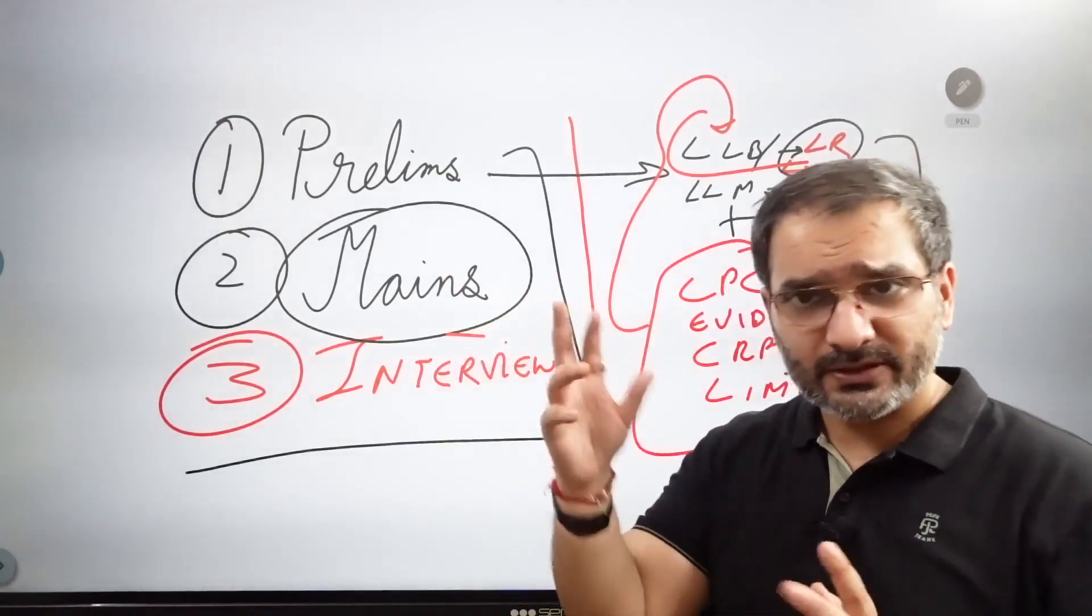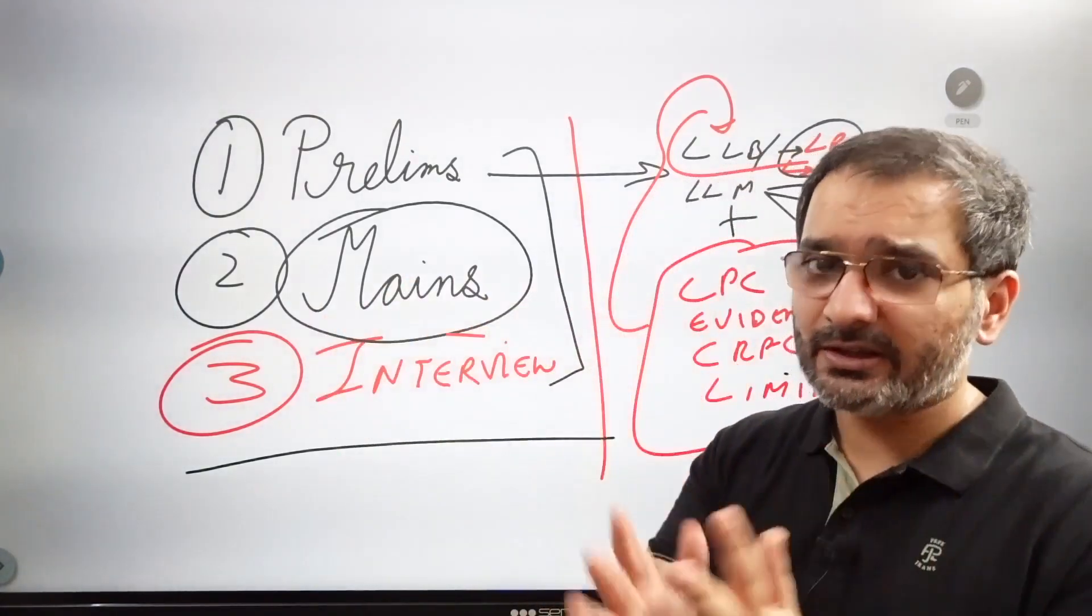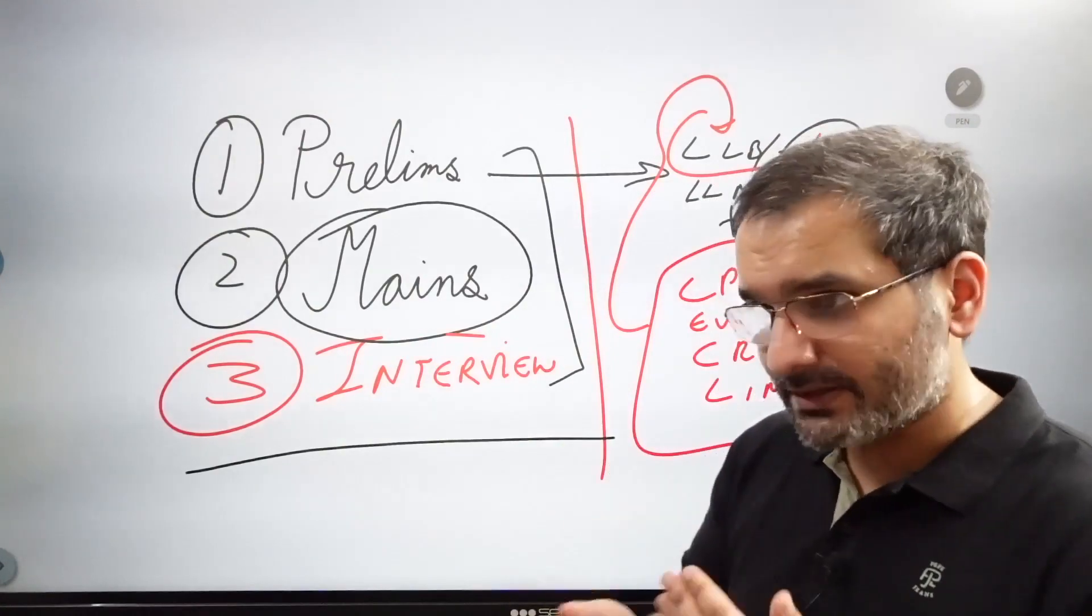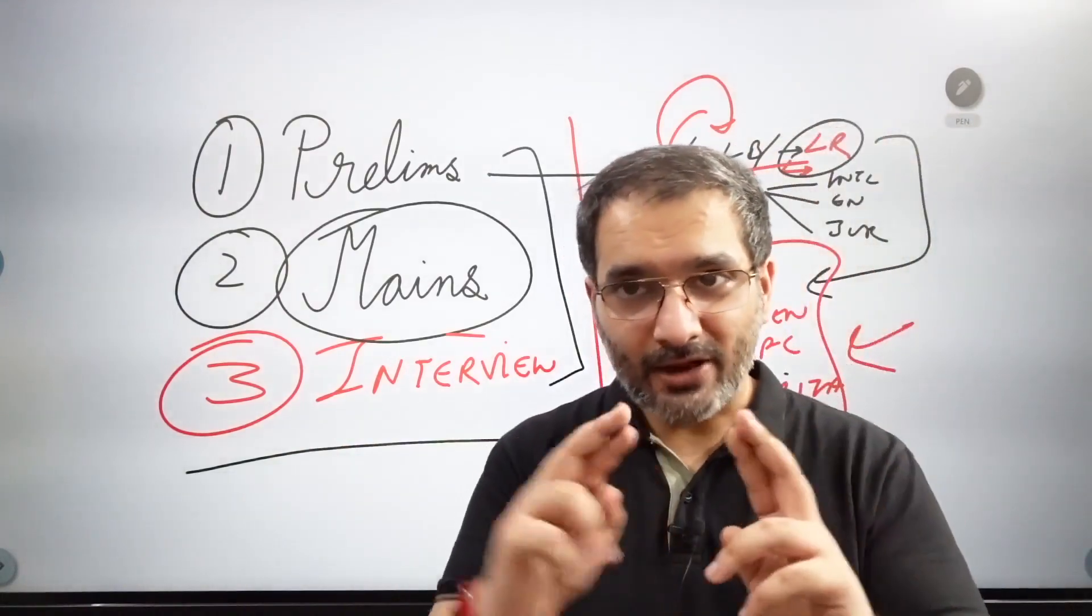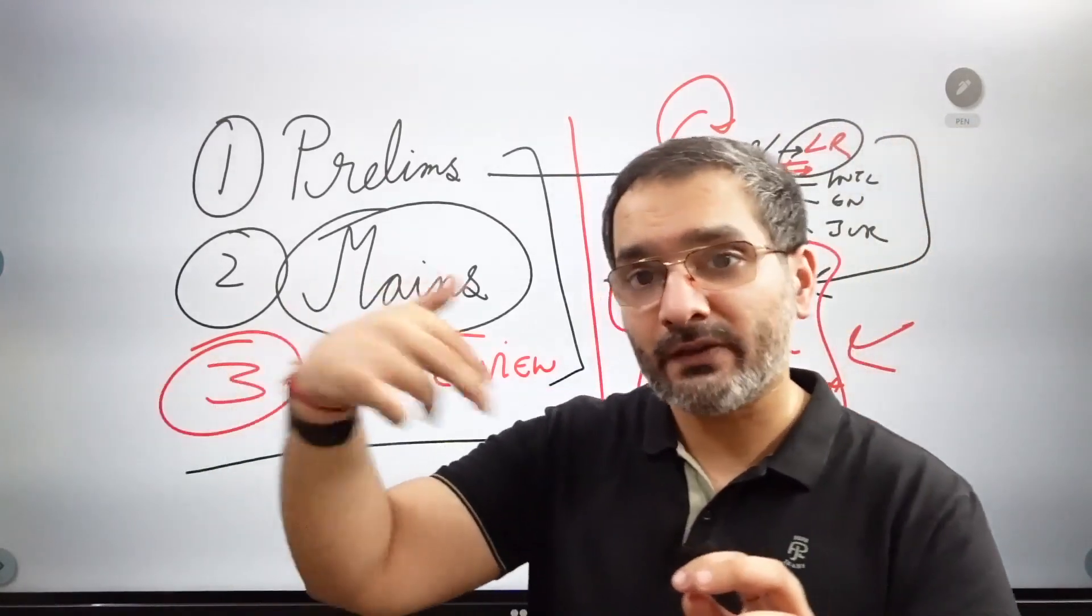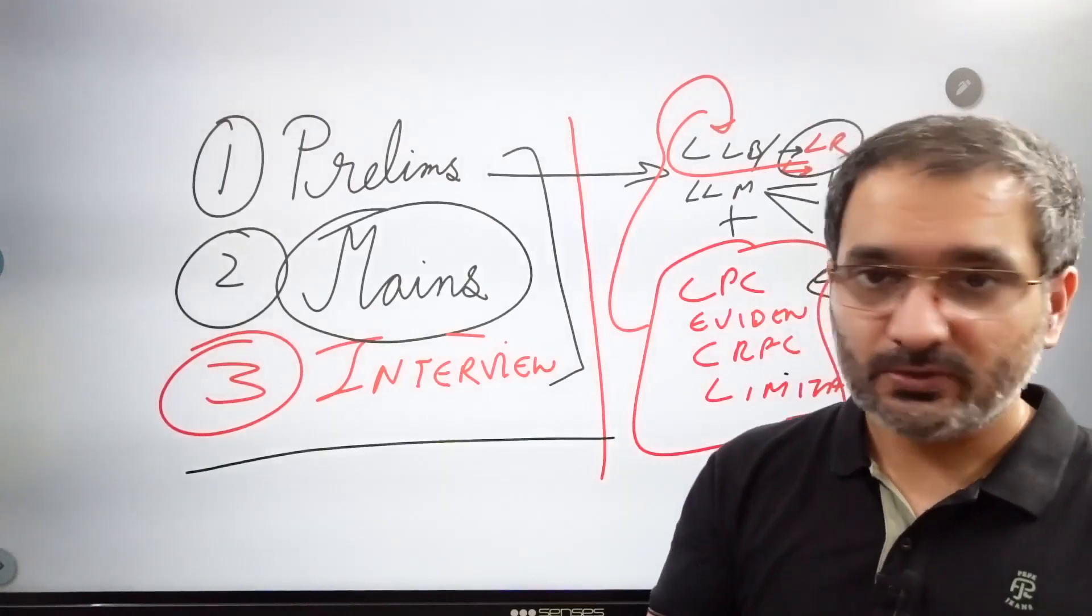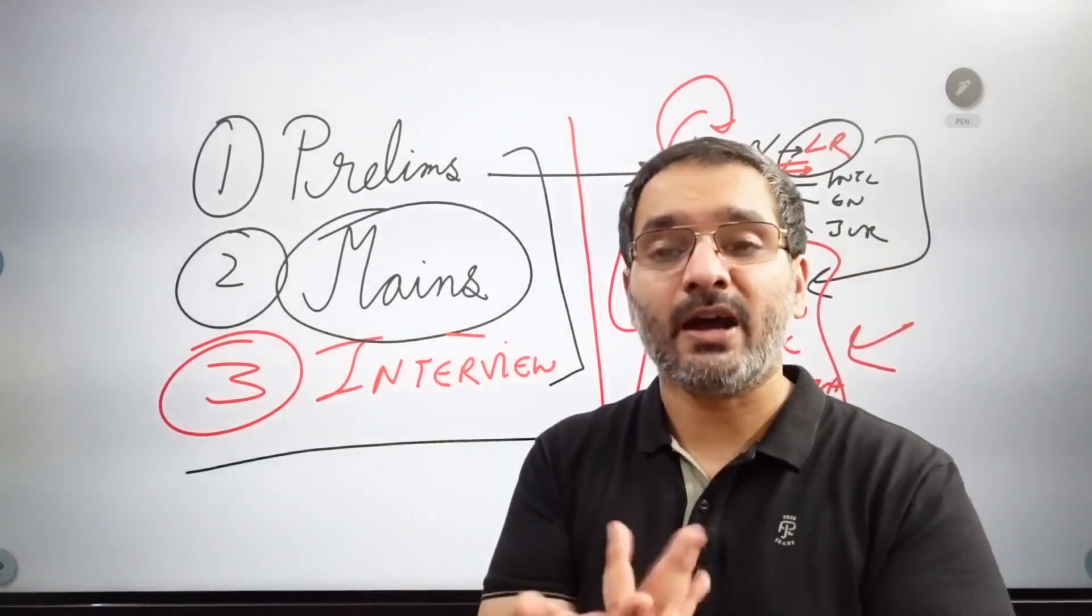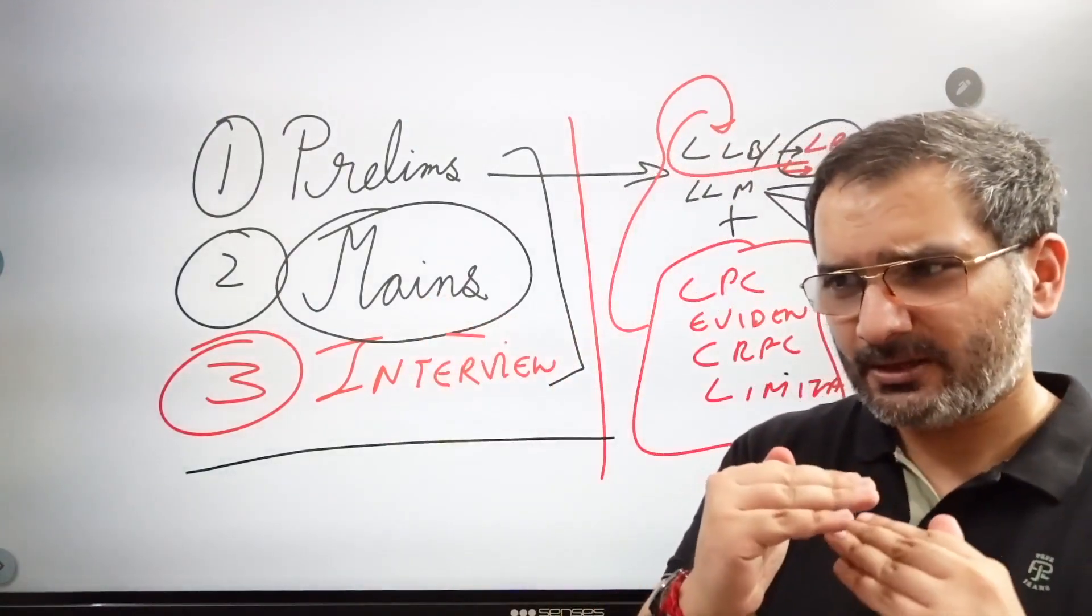Ye baat soch ke ab agar hum syllabus ki taraf chalein, syllabus ke baare mein hum discussion kar chuke hain on this very channel in about a couple of videos. But this mindset hopefully you know is clear in your head. A habit of audi alteram partem that is hearing the other side before you give a judgment. So it always happens and it always happens very frequently even in your social circle even in your family. We all keep passing judgments without knowing the other side of the story. But as a judicial officer you need to reserve your judgment before you hear the other side. You just cannot give a decision before knowing the entire story from both perspectives. It is after all an adversarial system of law.